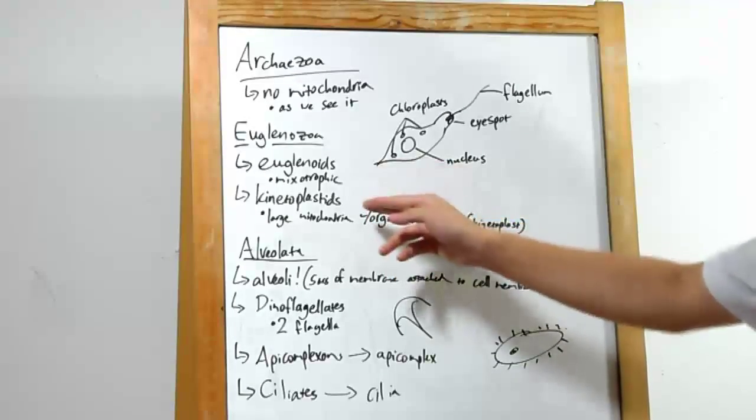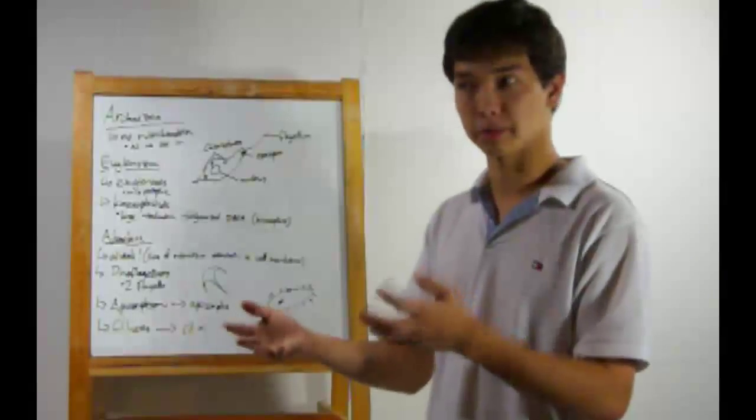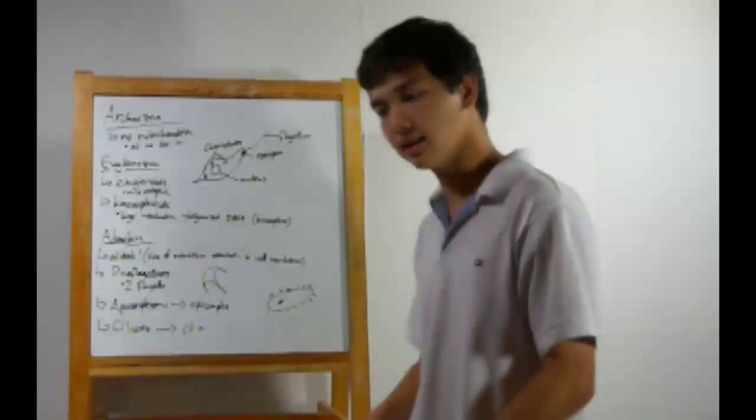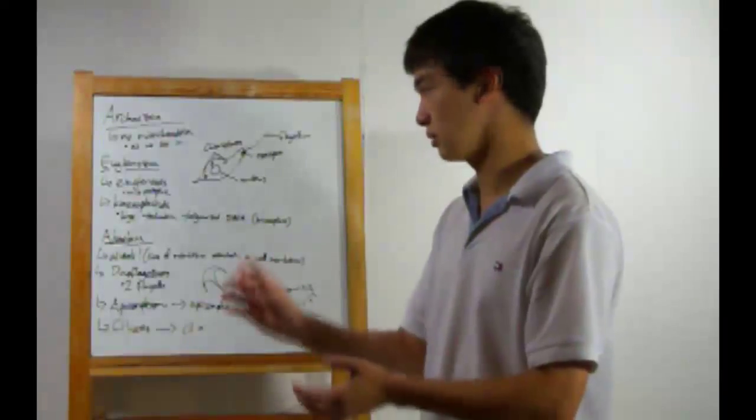Alright. Next up in here, kinetoplastids. These have a structure known as a kinetoplast. That's why they're kinetoplastids. Which is just a large mitochondria with very organized DNA.